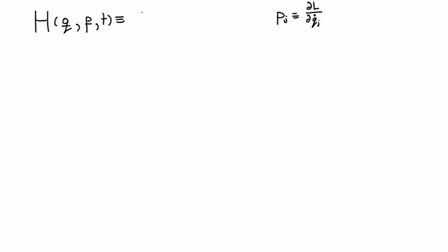So the Hamiltonian, and I won't use vector notation, I'll do the explicit sum, is the sum of the time derivatives of q times the momenta, pj, minus the Lagrangian.